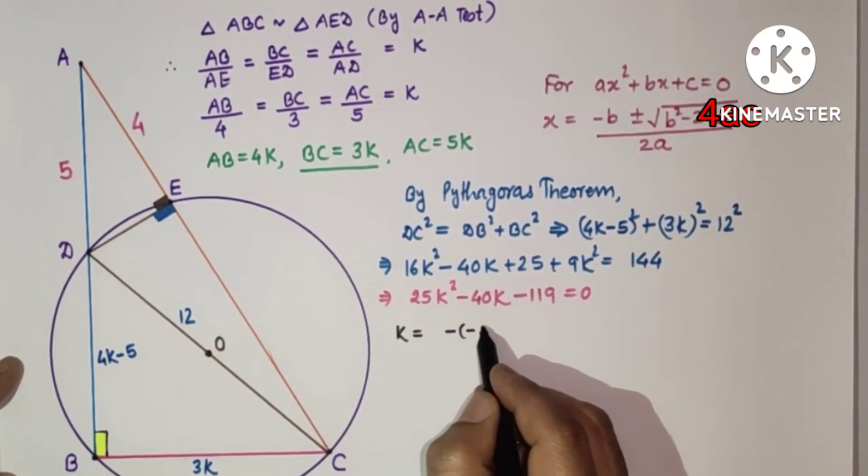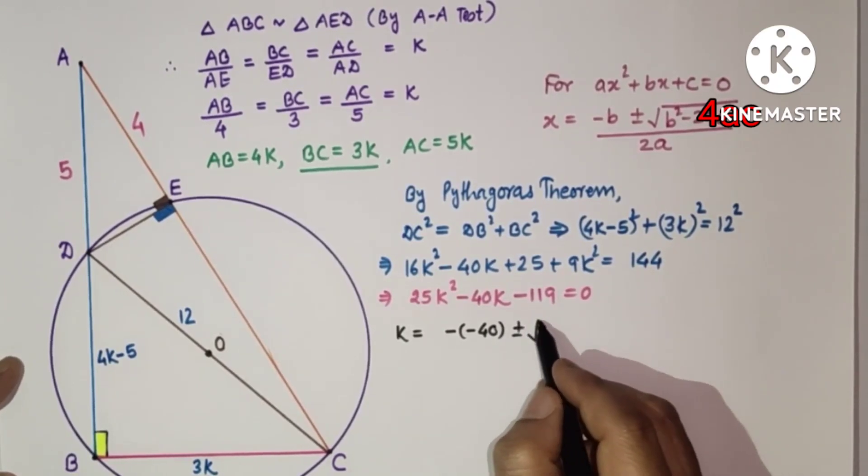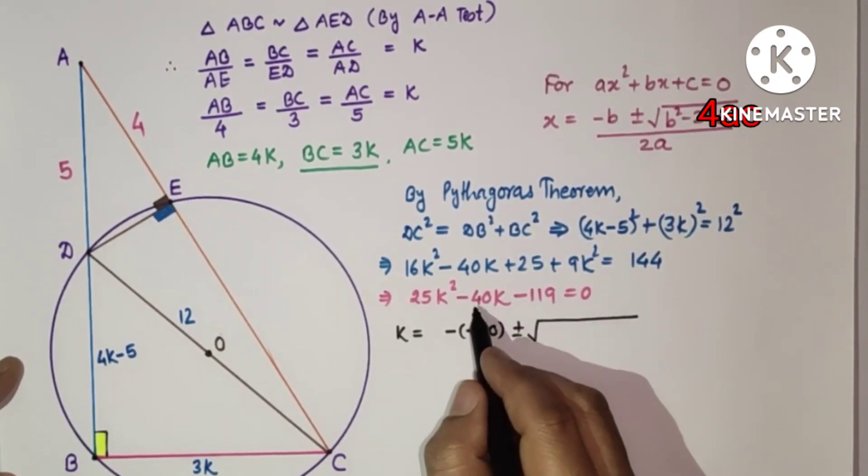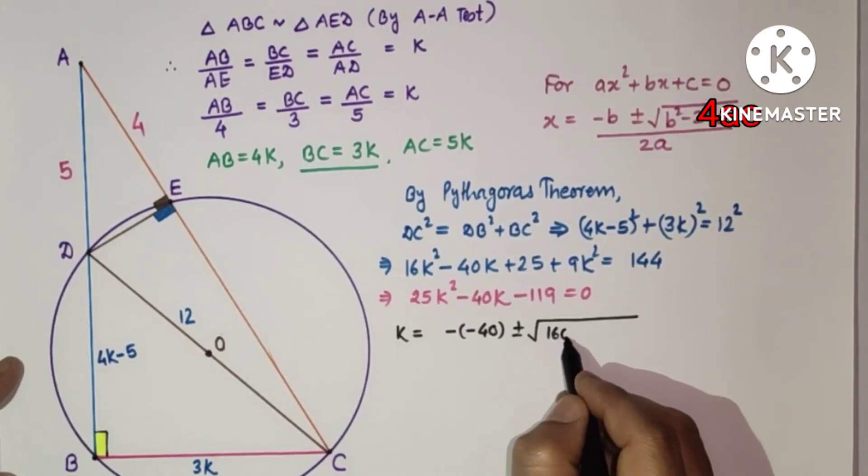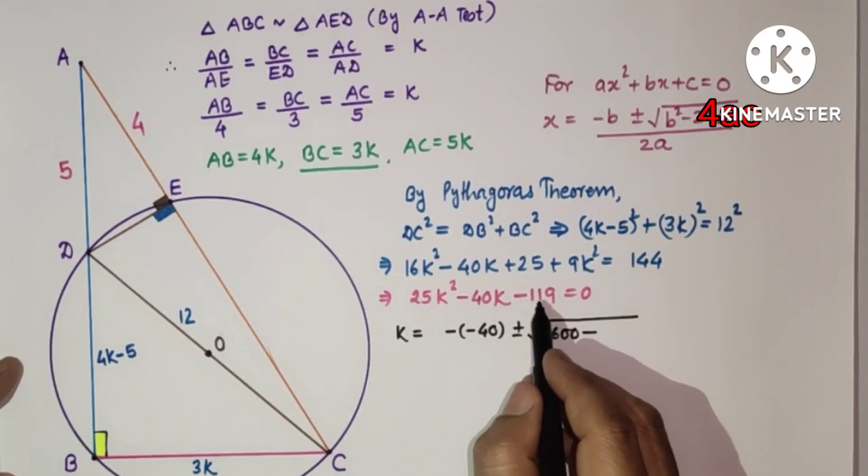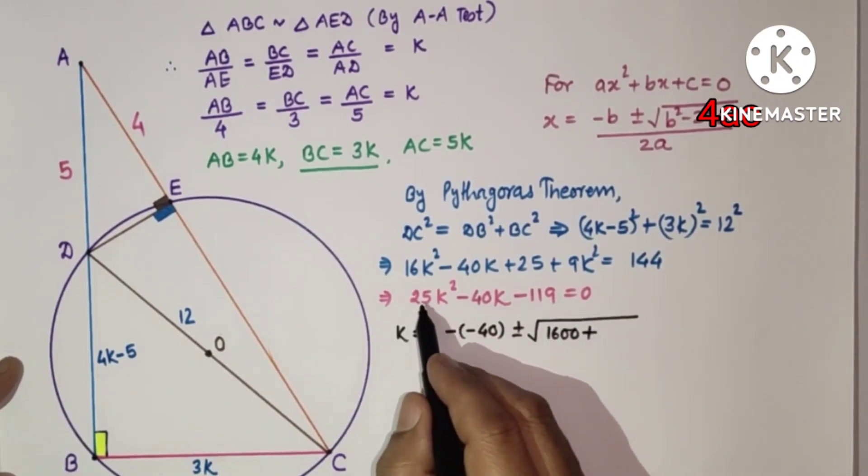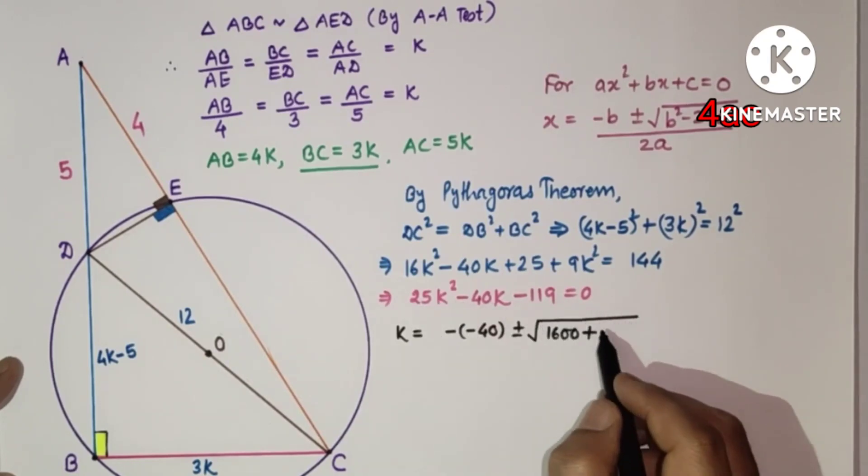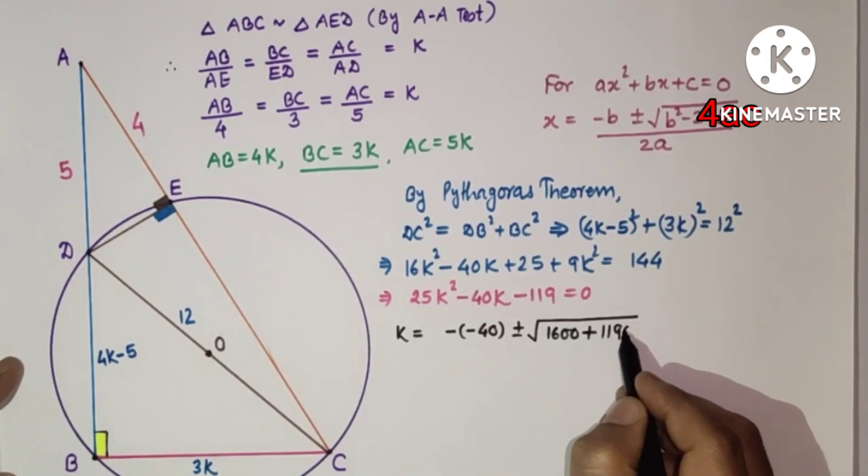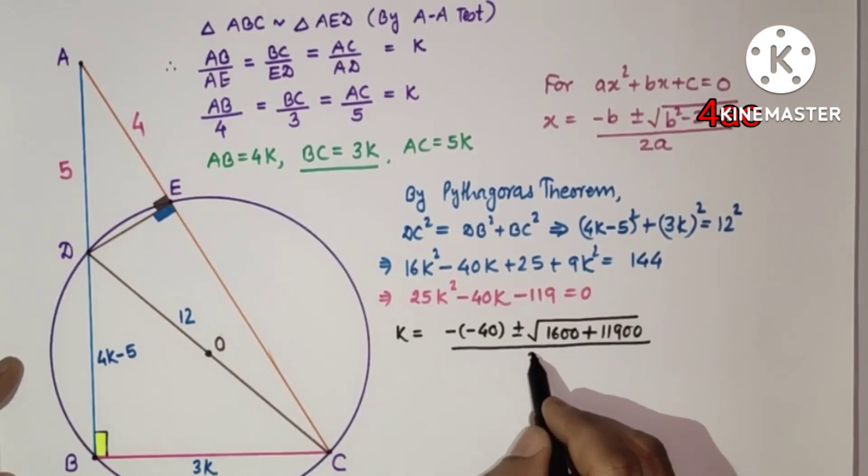Minus of minus 40 plus minus under root minus 40 square, which is 1600, minus 4 into 25 into minus 119. Minus minus is plus, so 4 into 25 is 100 into 119, so 11900, by 2 into 25.